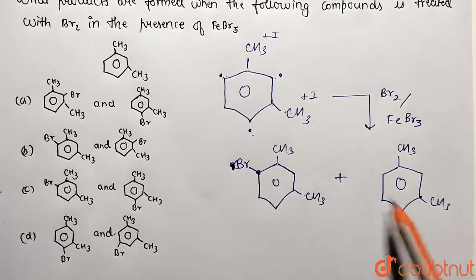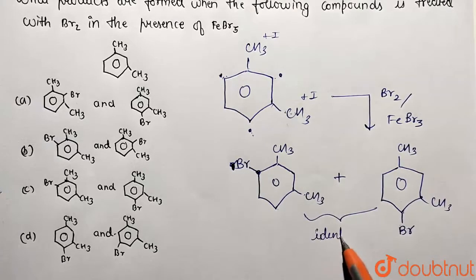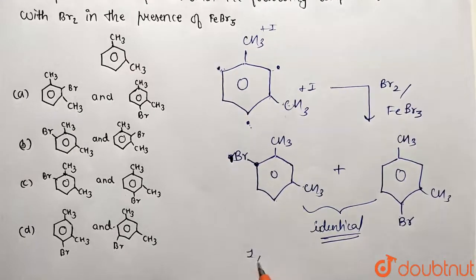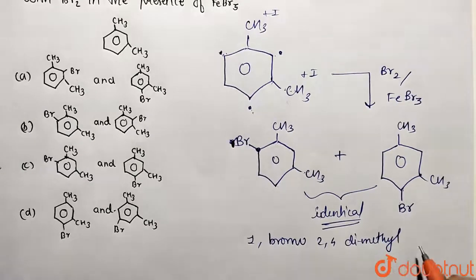These are the respective molecules formed which are identical. If you go by the name of compound, what is going to be named? 1-bromo followed with 2,4-dimethyl and the name completes with benzene.